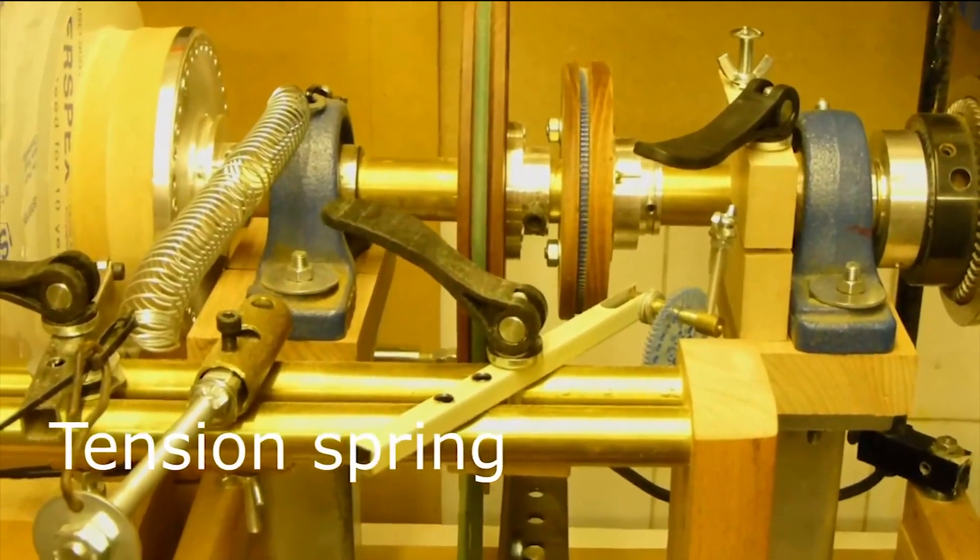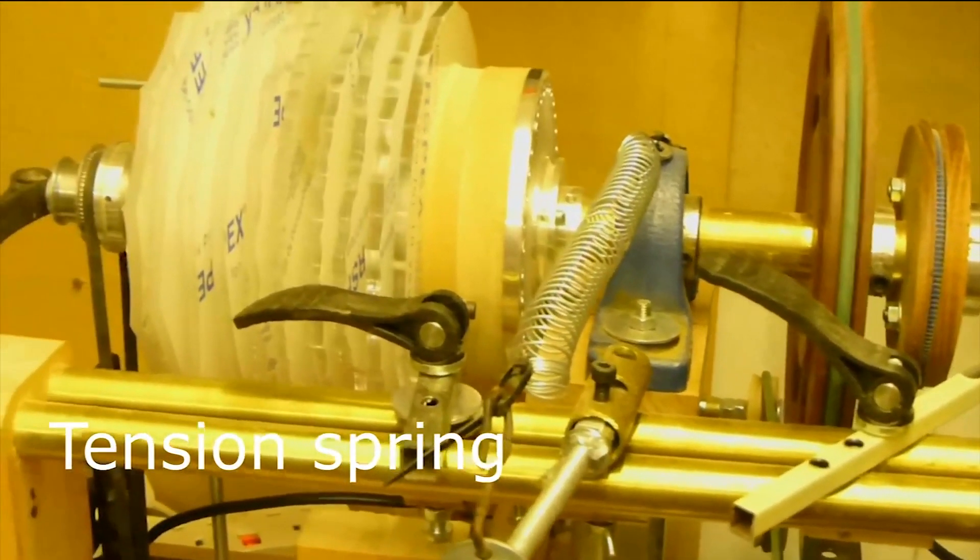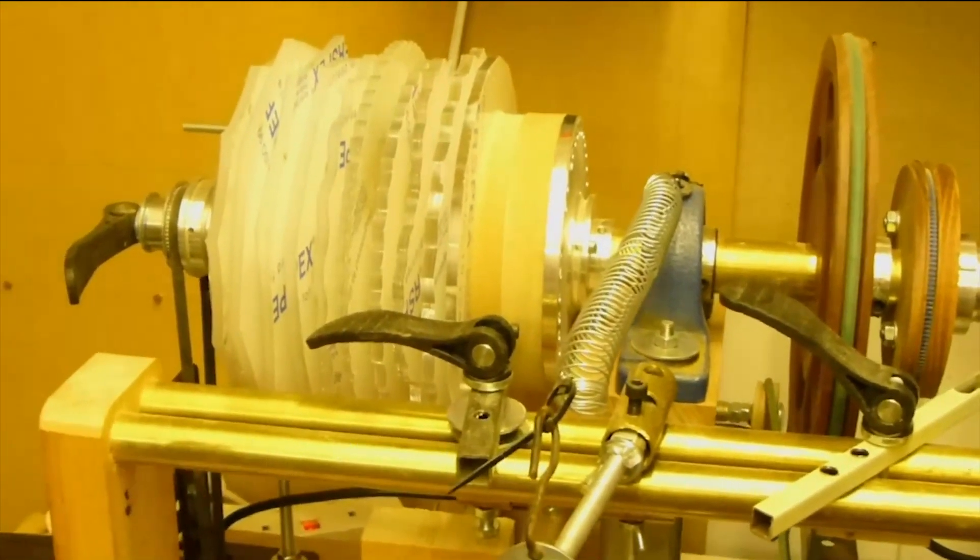We're now looking at the main tension spring. On the right is the wheel for the manual drive.